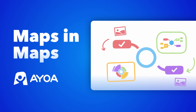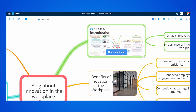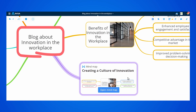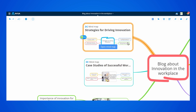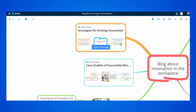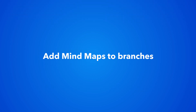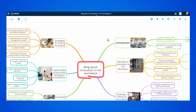This is Maps in Maps in AOA. You can now add multiple maps to any MyMap, making brainstorming easier than ever before. Let's see how you can add MyMaps to branches.